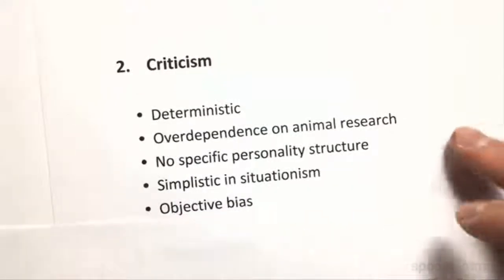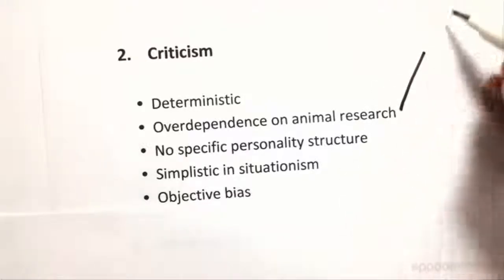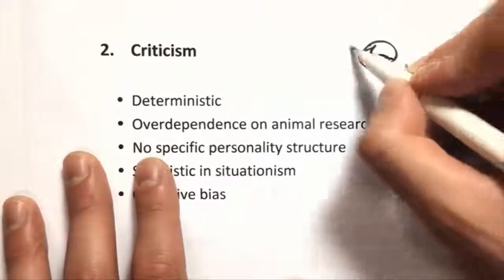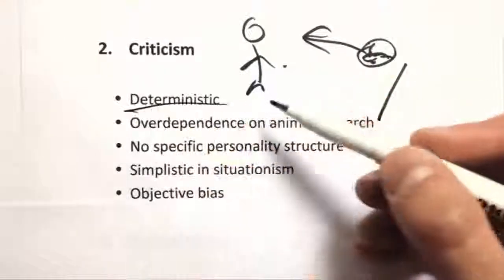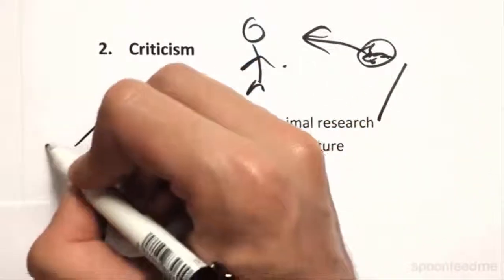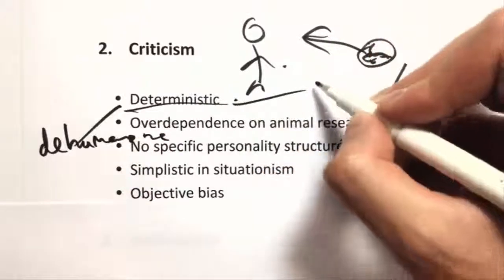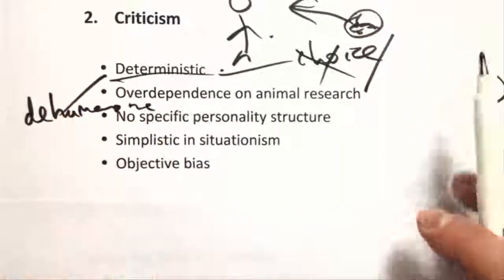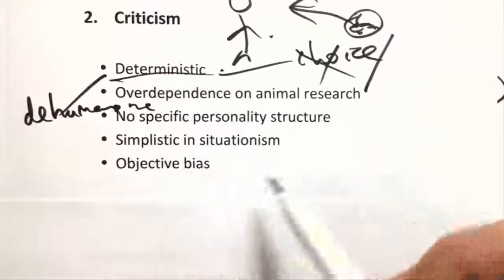Some criticisms include the deterministic nature of the theory and its over-dependence on animal research. The animal research is a problem because studies done on rats may not transfer well to humans. The determinism is also dehumanising because it denies the existence of free choice, which has major implications for legal systems and ethics.